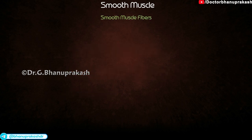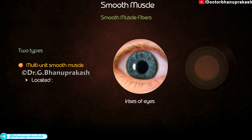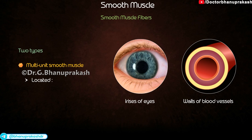Smooth muscle fibers. There are two types. Multi-unit smooth muscle is located in the irises of the eyes and walls of blood vessels. The contraction is rapid and vigorous.